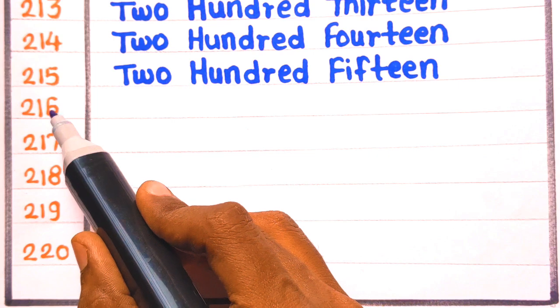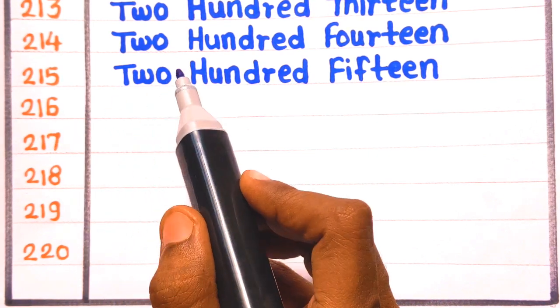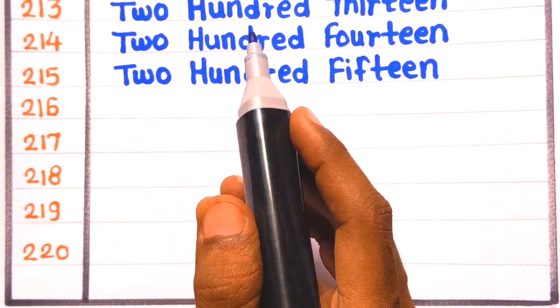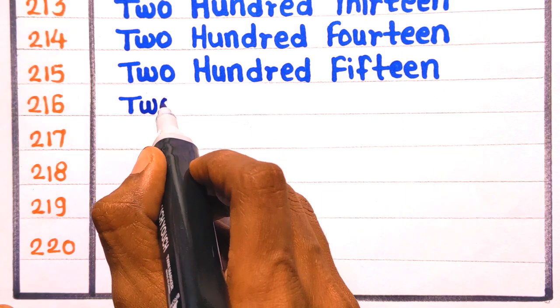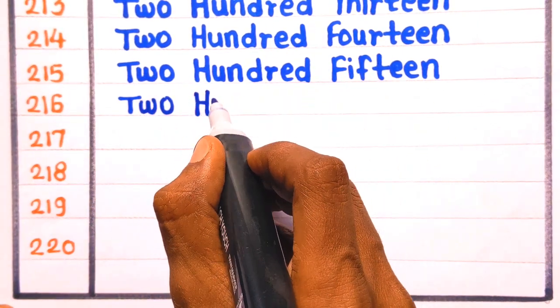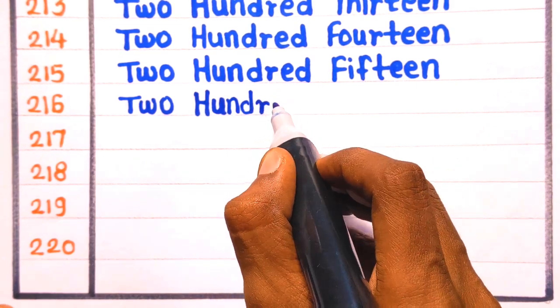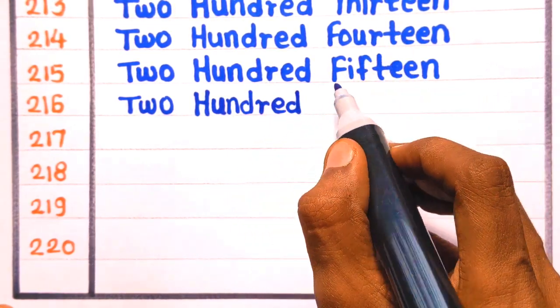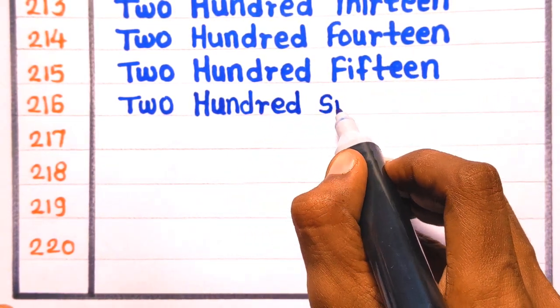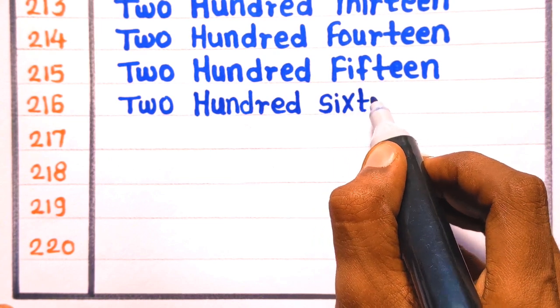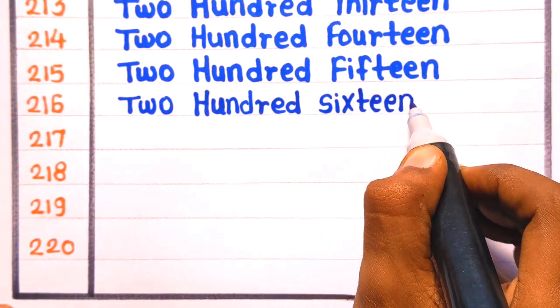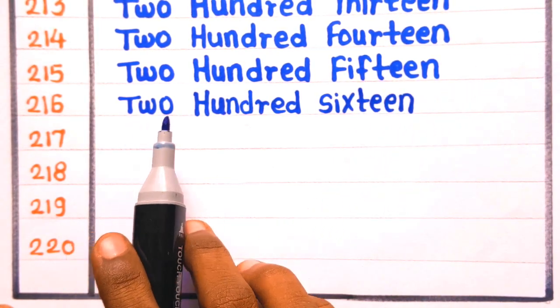Next number is 216. T-W-O, two, H-U-N-D-R-E-D, hundred, S-I-X-T-E-E-N, sixteen. Two hundred sixteen.